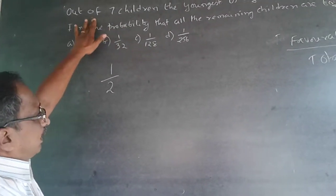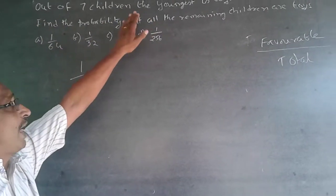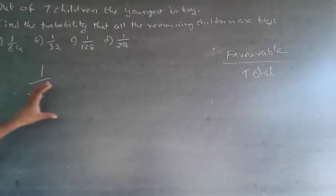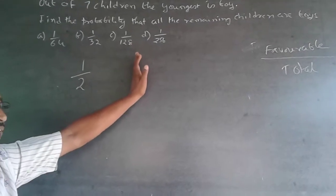There are totally 7 children. They have asked for the probability of all the remaining children to be boys. So, what happens? The probability of the first child to be a boy is 1 by 2. Now, don't add 1 by 2 again.